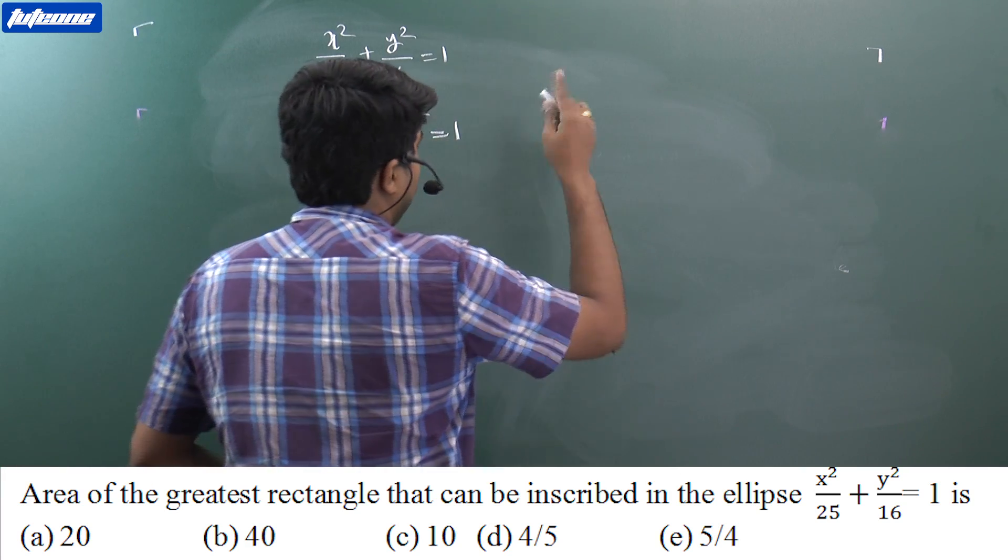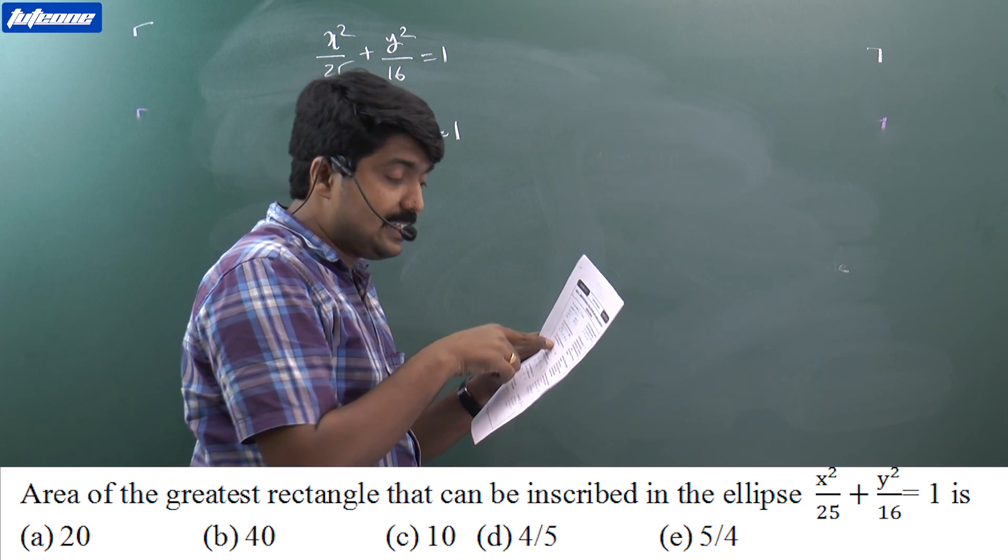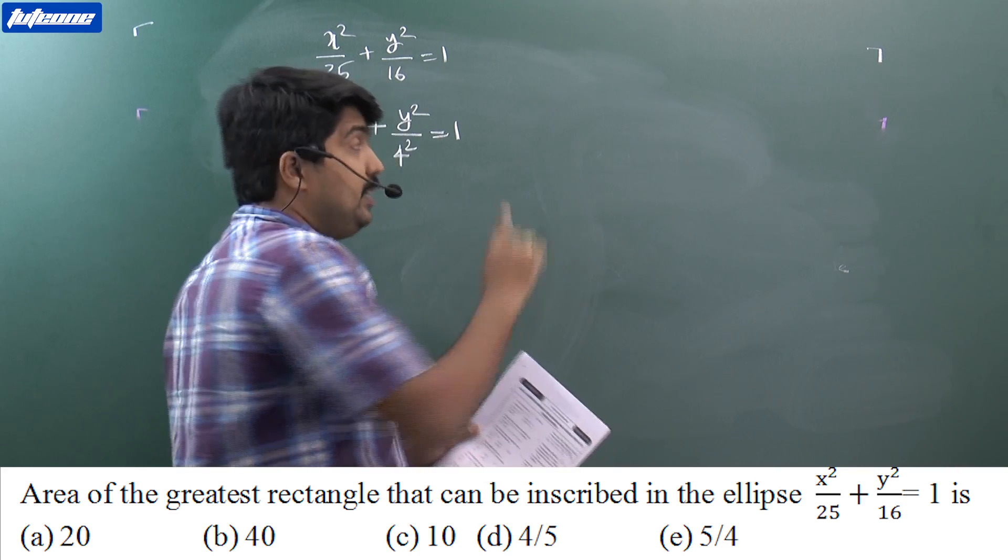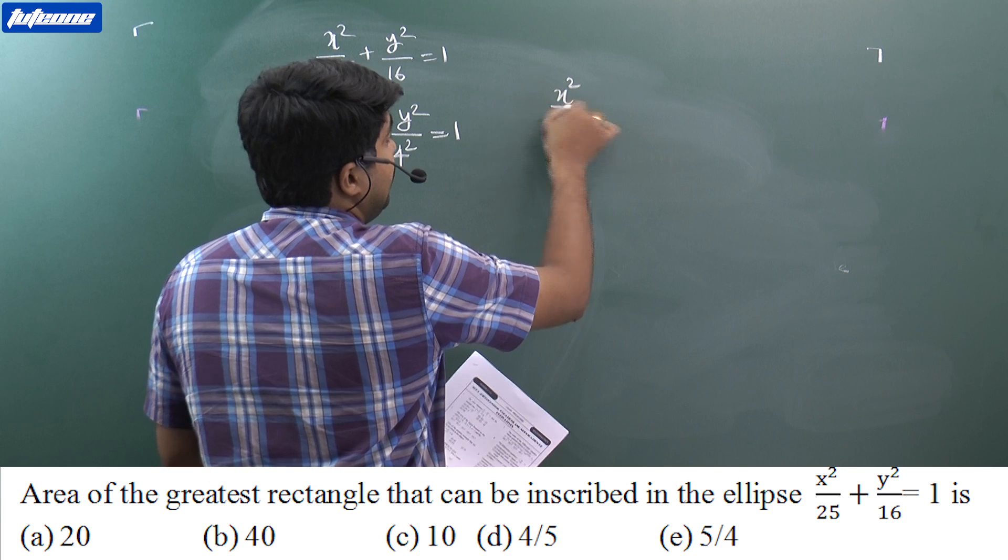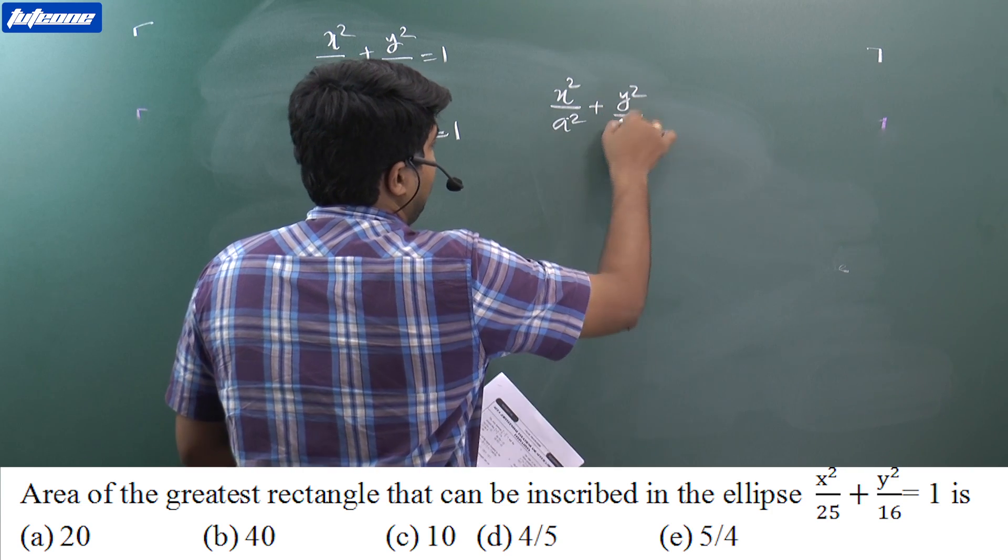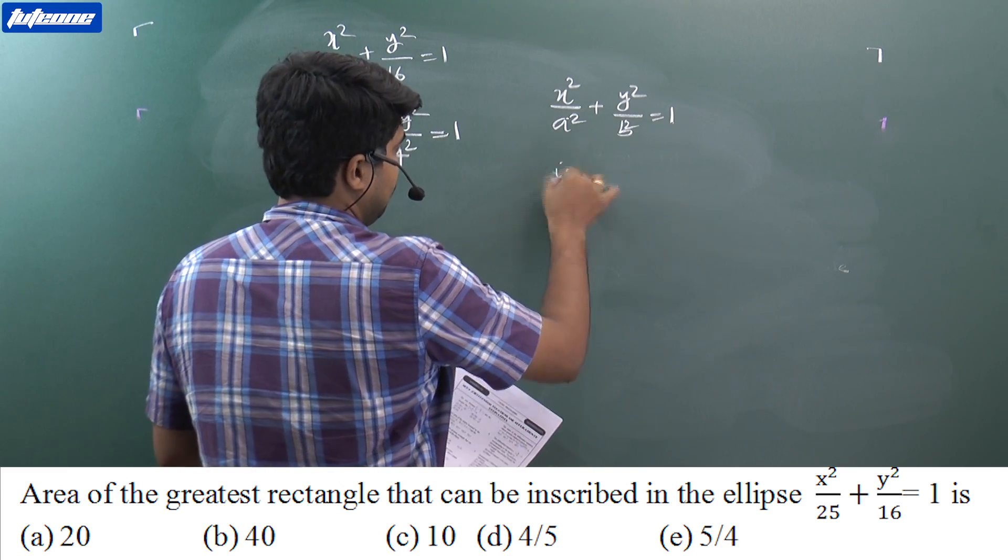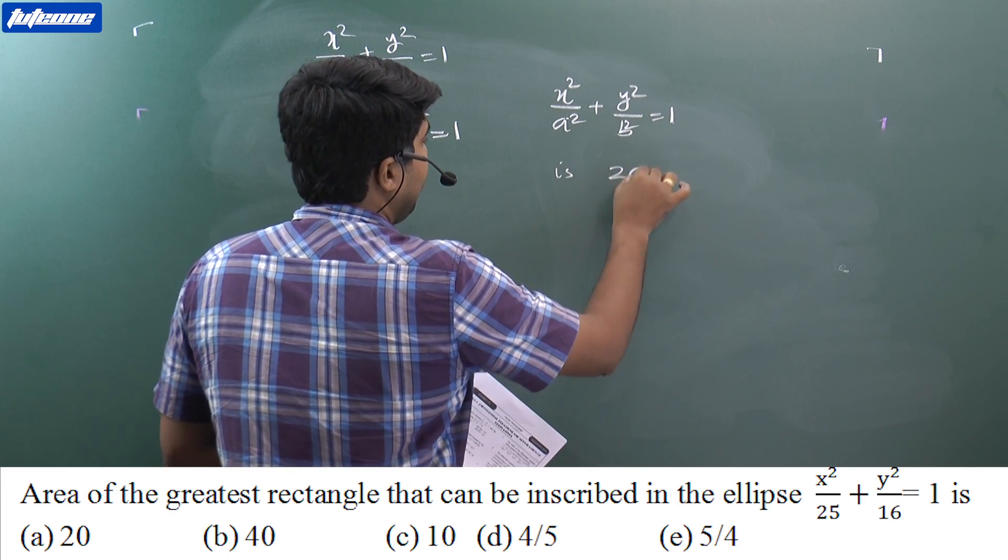Generally, you remember one point: the area of the largest rectangle that can be inscribed in an ellipse x² / A² + y² / B² = 1 is 2AB.